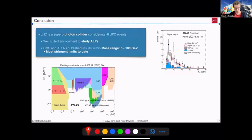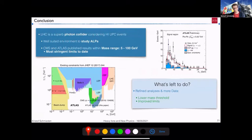So in conclusion, the LHC is a superb photon-photon collider when using UPC events. It's very suited to study axion-like particles. CMS and ATLAS already published results within the mass range 5 to 100 GeV, and it's the most stringent limits to date. And there is room for improvement. So we could lower the mass threshold, but only a little bit, not by huge factors, and also improve the limit with the data from run three. And that's all I wanted to share with you. Thanks a lot.